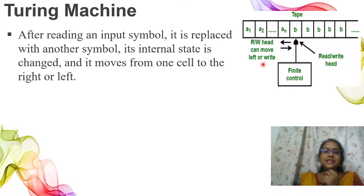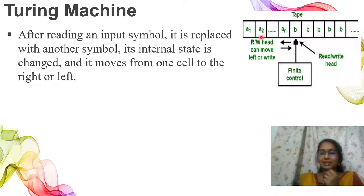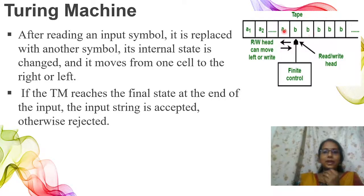Then its internal state is changed. It moves from one cell to the right or left. If the TM reaches the final state at the end of the input, the input string is accepted. If the state is changed and input is read, the last input is changed. If the TM reaches the final state at the end of the input, the input string is accepted.